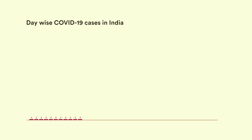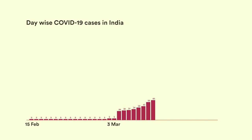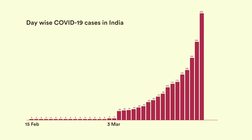This is a graph showing the number of daily cases of COVID-19 in India. From the 15th of February to the 3rd of March, we just had two new cases. But after that, it was a whole different story. The number of cases increased — not just increased, but exponentially increased. On the 22nd of March alone, we had 89 new cases. That's the highest increase in cases we have had so far.